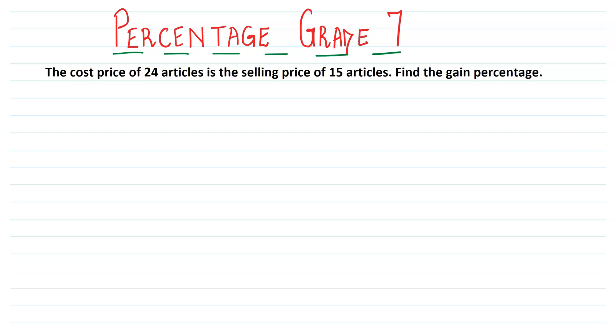So let's read out the problem. It says the cost price of 24 articles is the selling price of 15 articles. Find the gain percent.